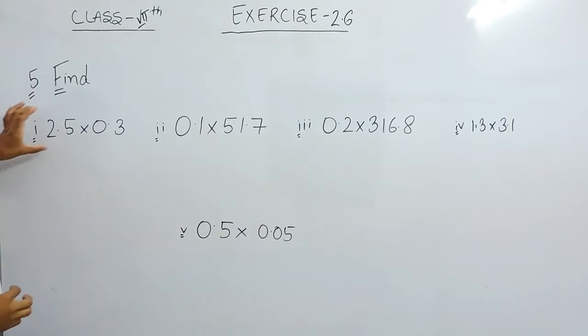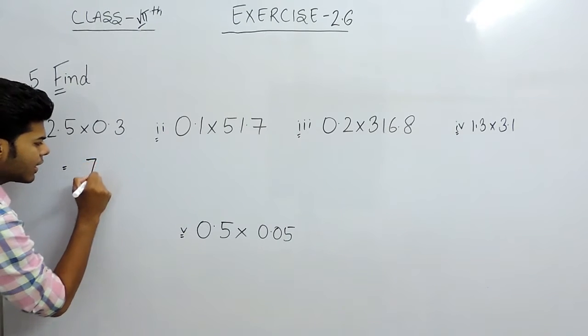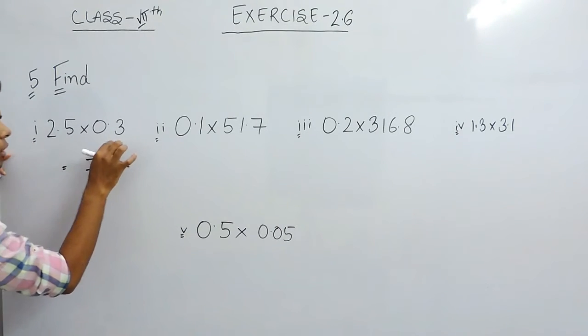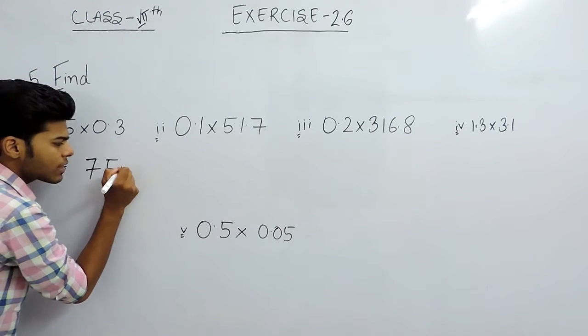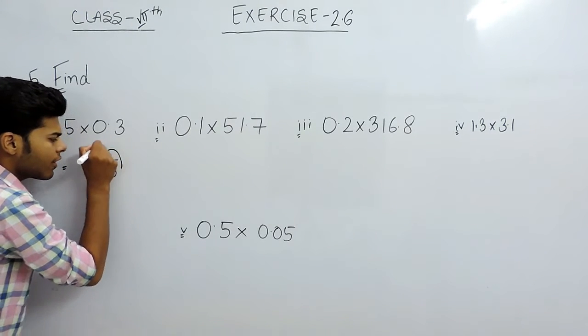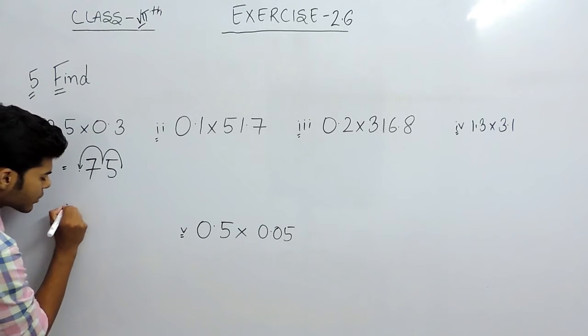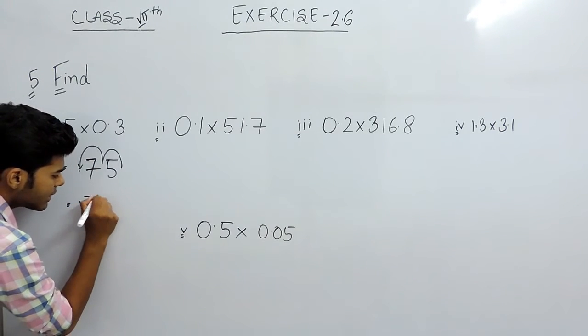So first, we will multiply the numbers normally: 25 multiplied with 3, and that will be 75. Now there are two decimal points, 1 and 2. So we will start from the right towards the left and put two decimal points, and it will come somewhere here. So the answer will be 0.75.